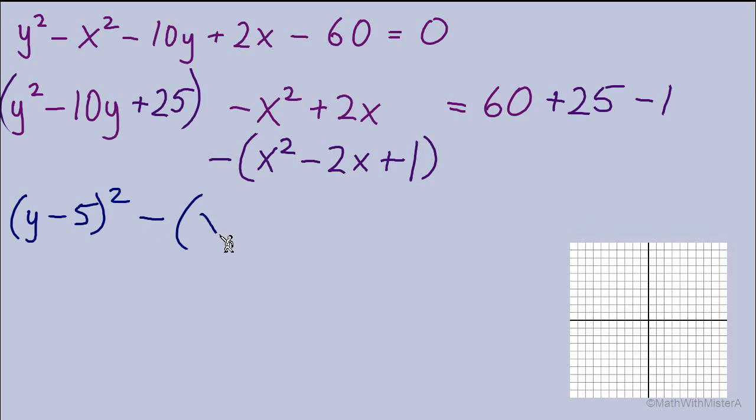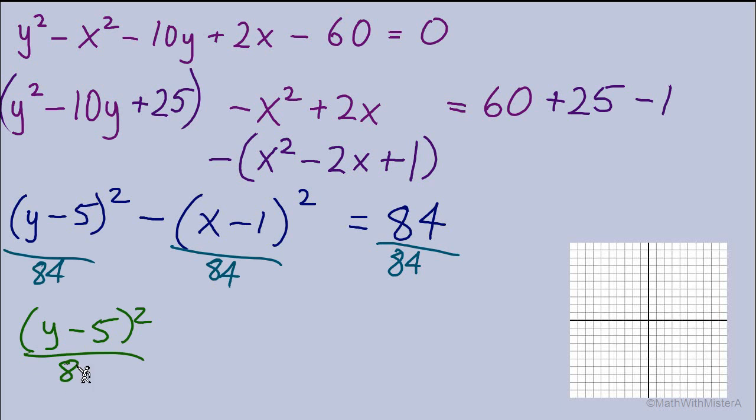Let's start to clean things up and write our completed squares: (y - 5)². Now we've got -(x - 1)² = 84. We know we are after a hyperbola where we see the equation equals 1. So the last move would be to divide every term by 84 to make that last number equal exactly 1. So we are now left with (y - 5)²/84 - (x - 1)²/84 = 1.